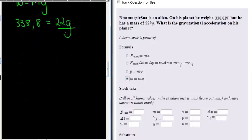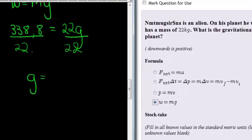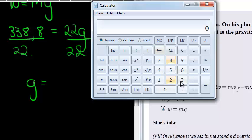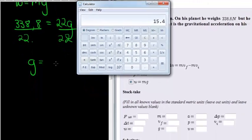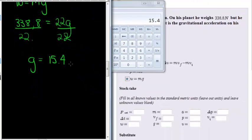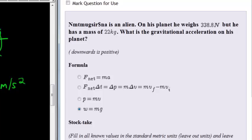Dividing both sides by 22 to calculate g gives us g equals 338.8 divided by 22, which is 15.4. Their gravitational acceleration is 15.4 meters per second squared. So let's put that in.